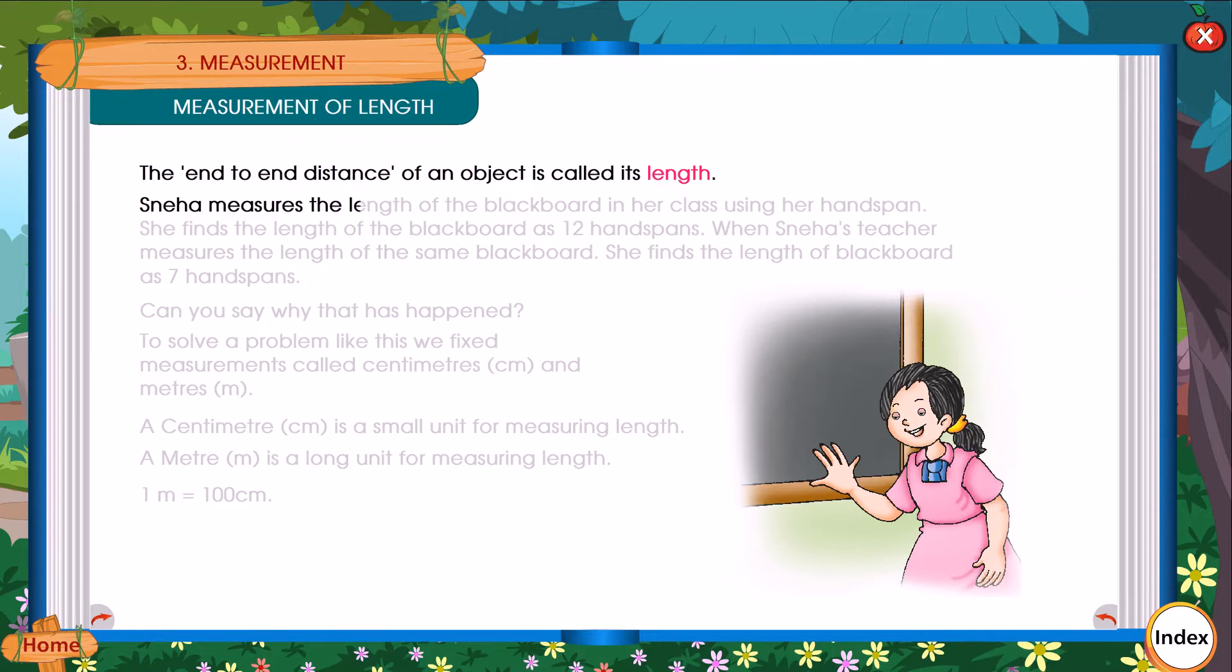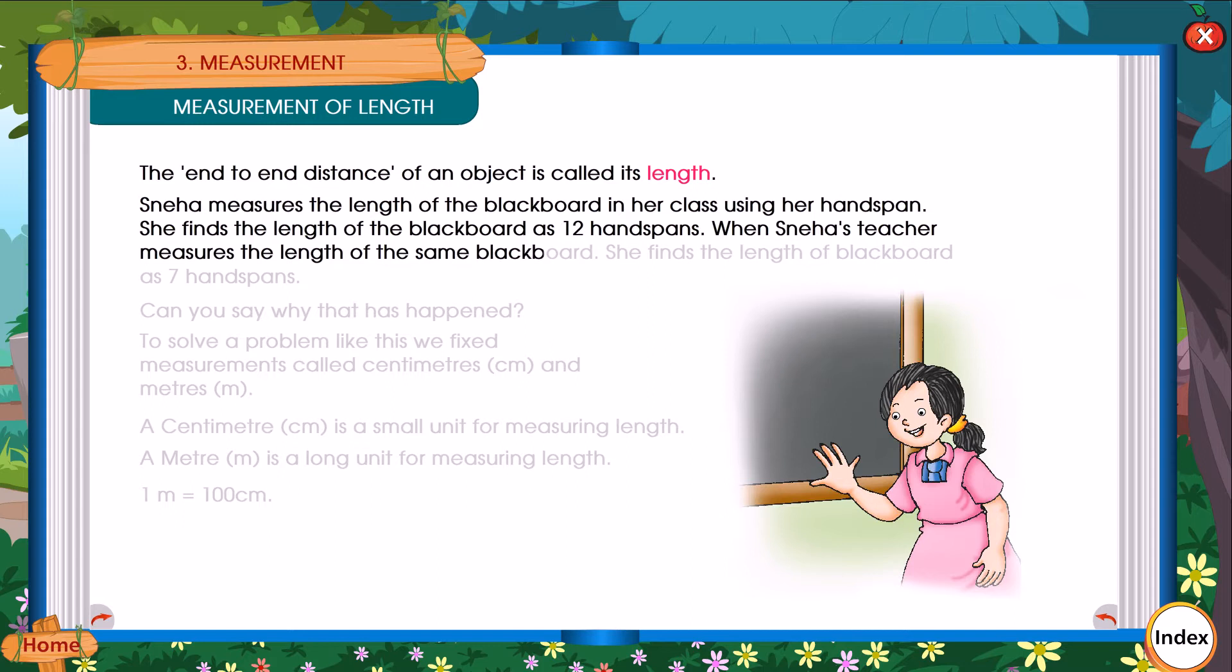Sneha measures the length of the blackboard in her class using her handspans. She finds the length of the blackboard as 12 handspans. When Sneha's teacher measures the length of the same blackboard, she finds the length of the blackboard as 7 handspans. Can you say why that has happened?